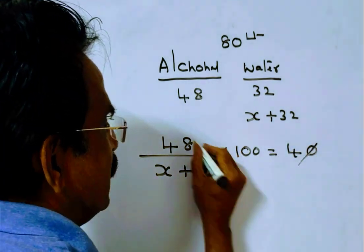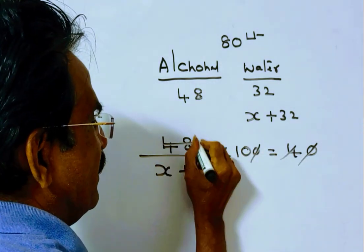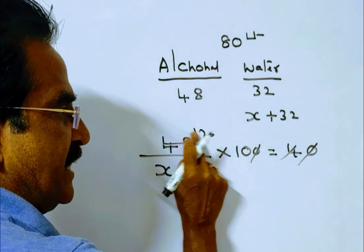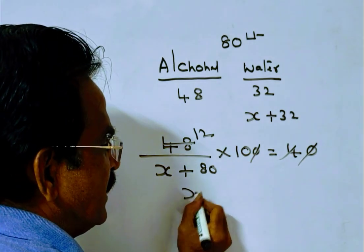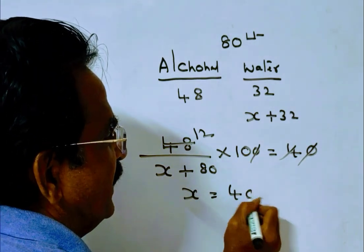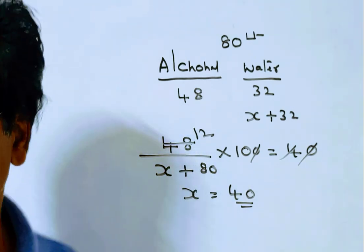40 percent. So 48 divided by x plus 80 times 100 equals 40. This gives us x plus 80 equals 120, so x equals 40 liters. The answer is 40 liters. Thank you.